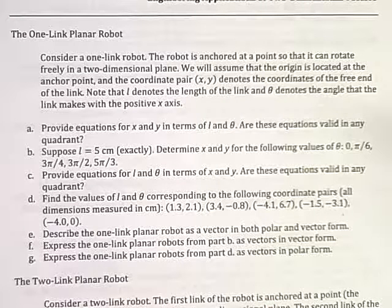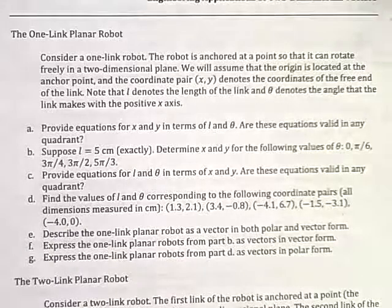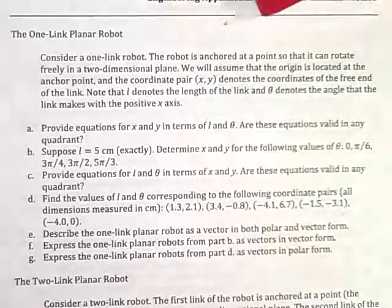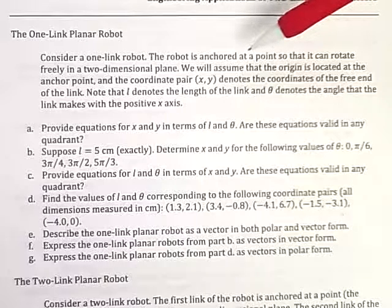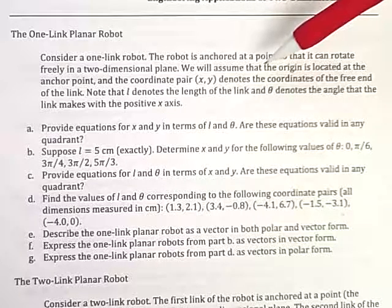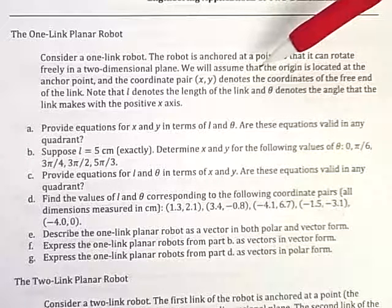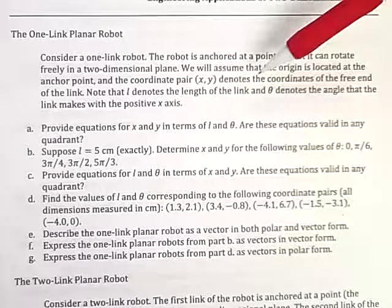Okay, so what we want to work with here is the one-link planar robot. And you can see we've got a description right there. It says, consider a one-link robot. The robot is anchored at a point so that it can rotate freely in a two-dimensional plane. We'll assume that the origin is located at the anchor point and that the coordinate pair x, y denotes the coordinates of a free end of the link.